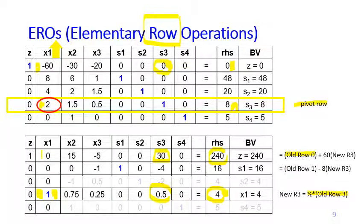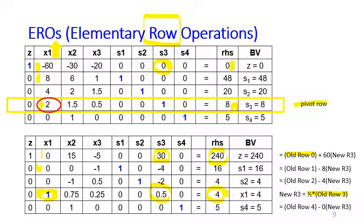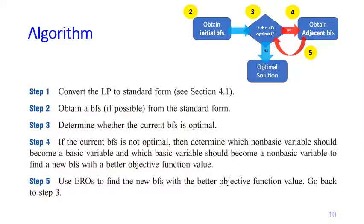For row one, to convert the coefficient 8 to 0: new row 1 = old row 1 minus 8 times new row 3, applied to the entire row. Similarly for rows two and four. After obtaining the new table, the basic variables change from s1, s2, s3, s4 to s1, s2, x1, s4 — x1 has successfully entered the basis and s3 has left to become a non-basic variable. Step five is complete; we return to step three.